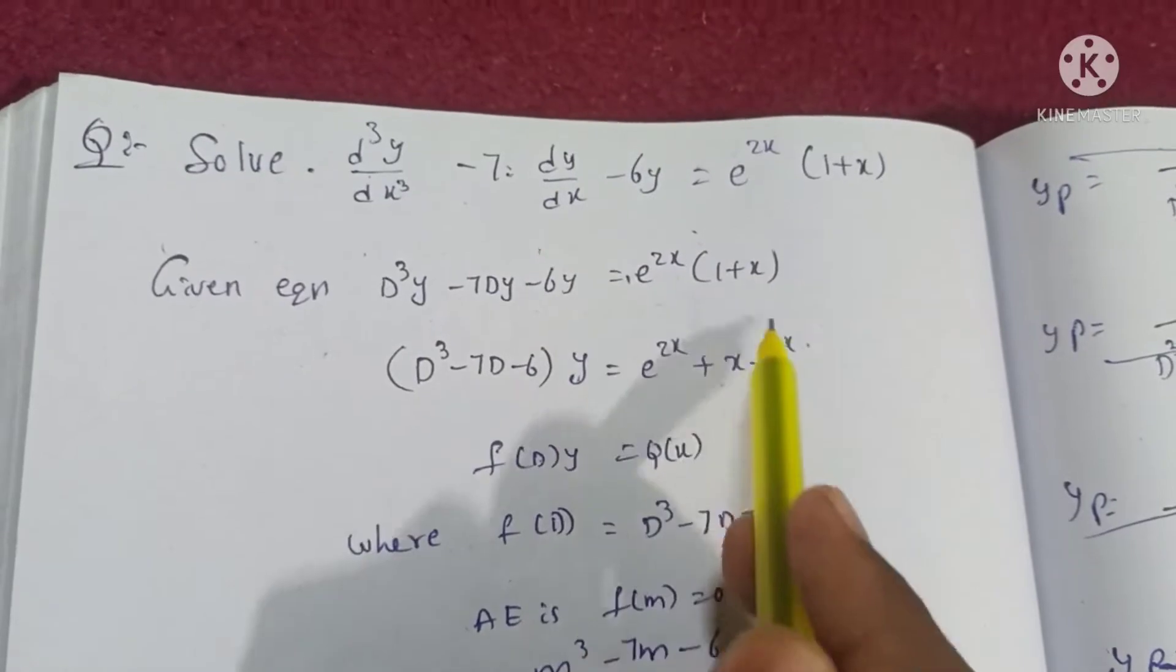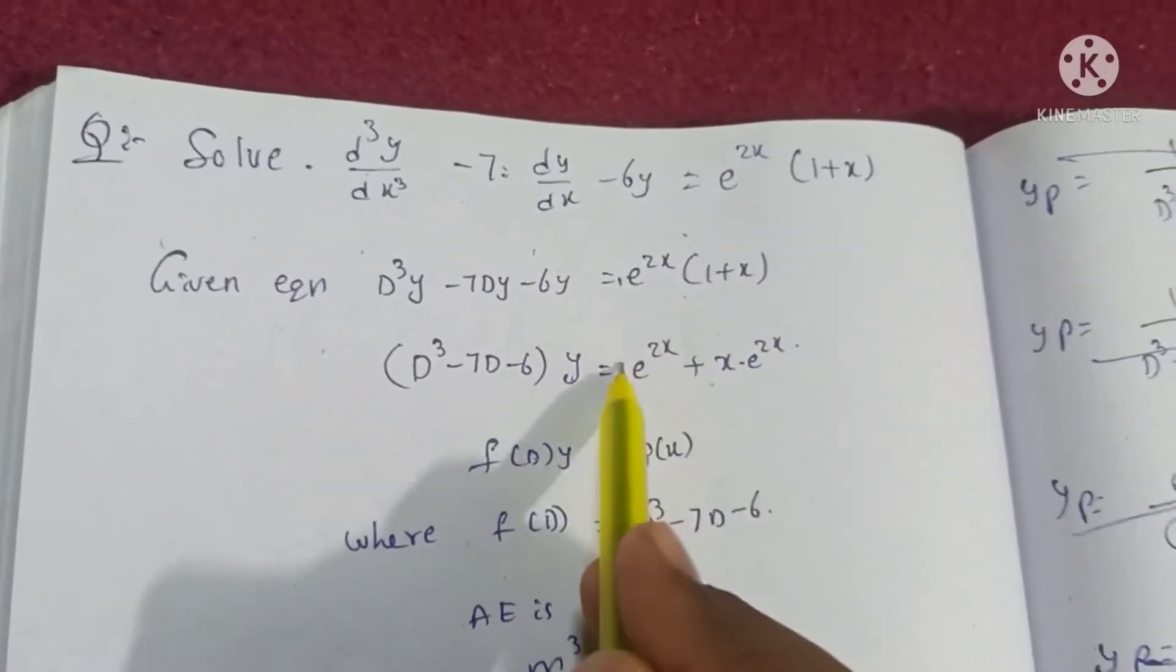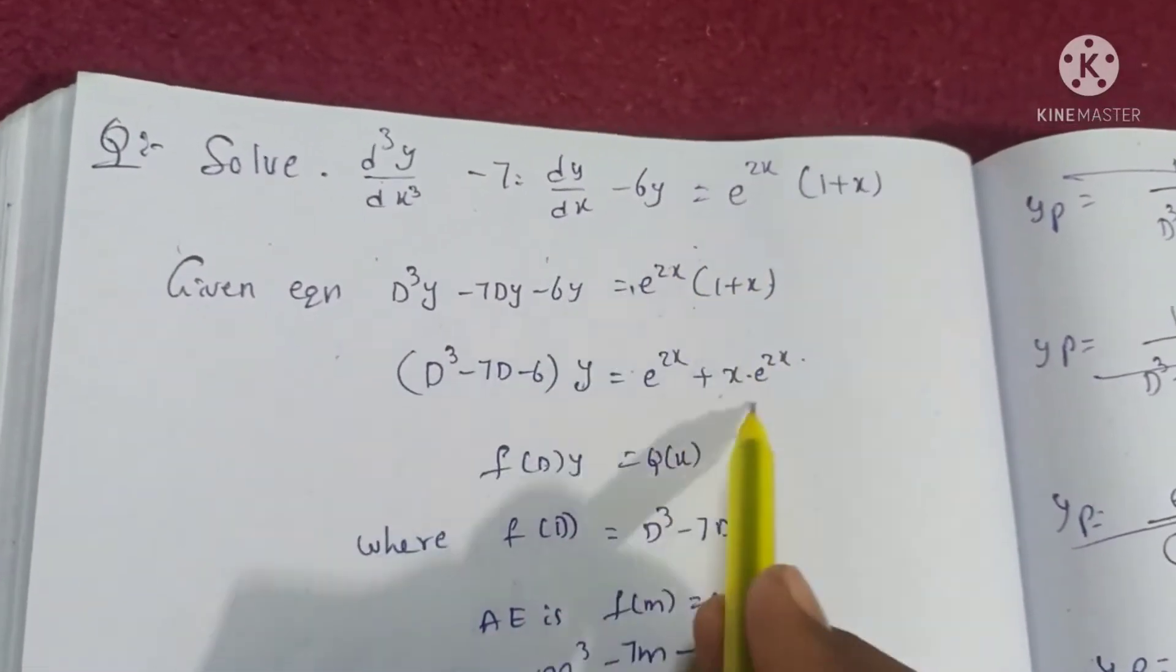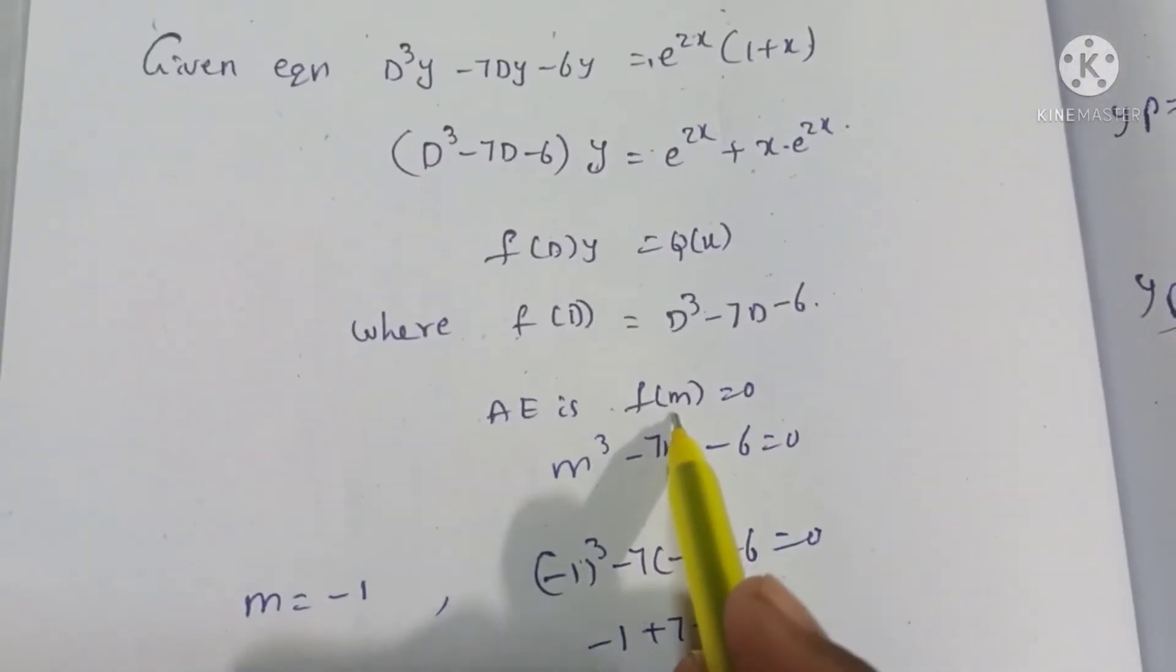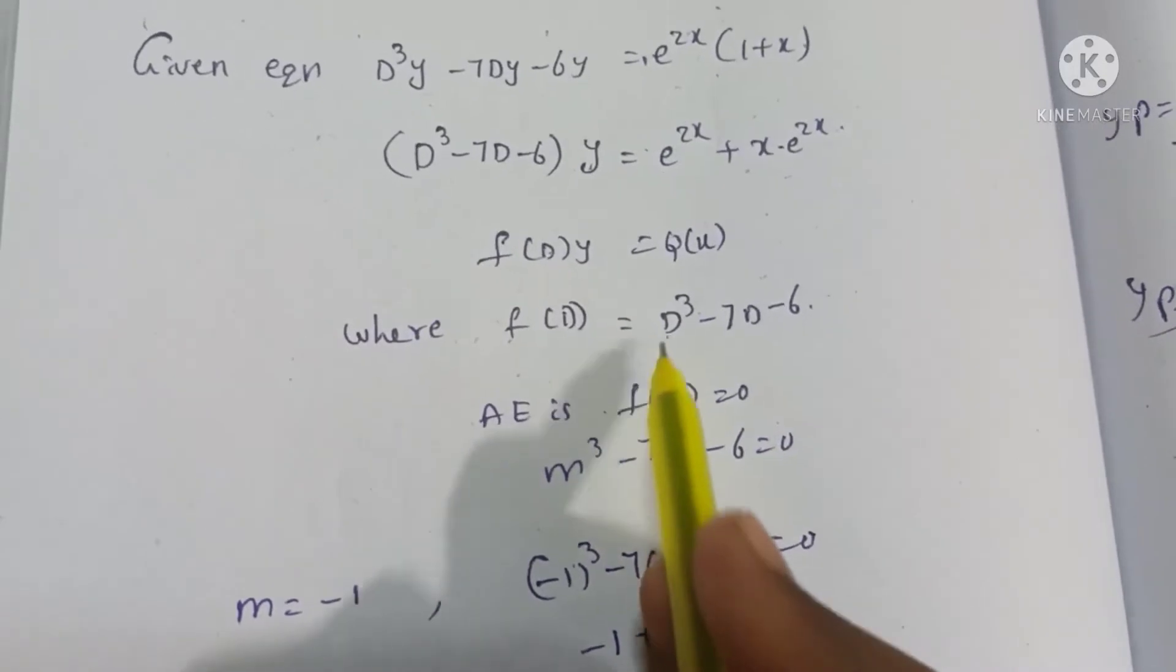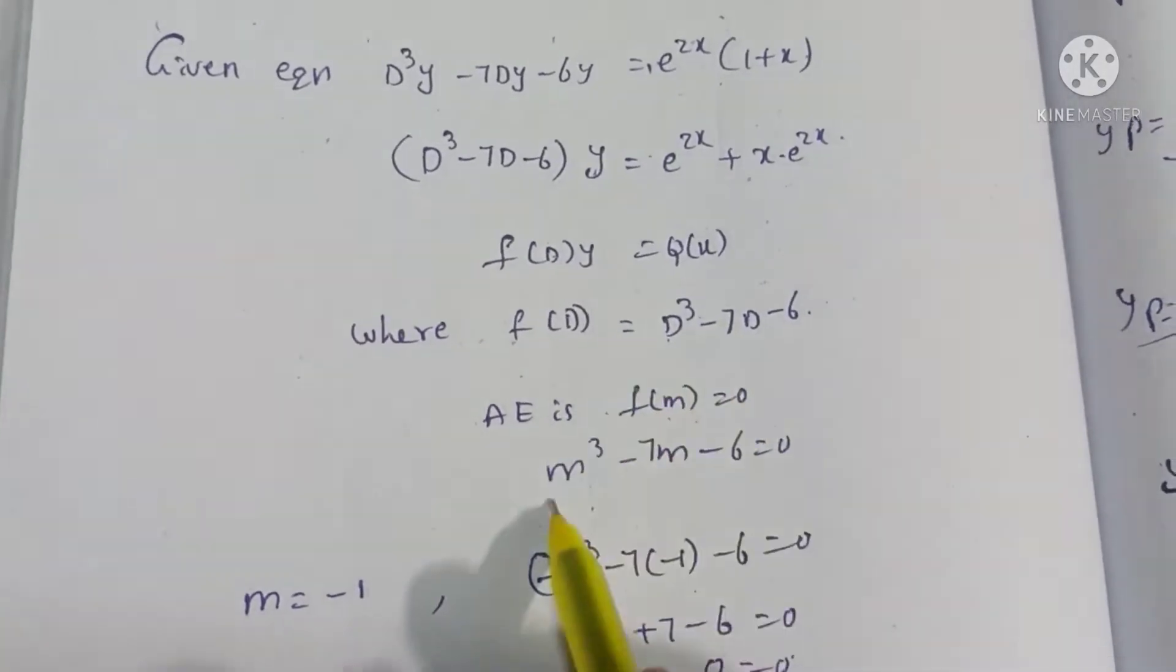We can write this as f(D) of y = Q(x), where f(D) value we need to find. For the auxiliary equation, f(m) = 0.